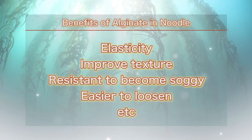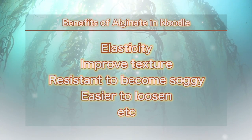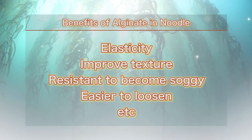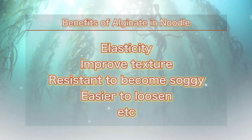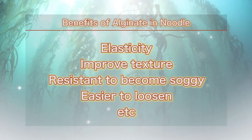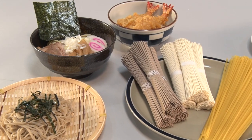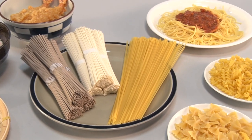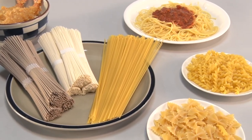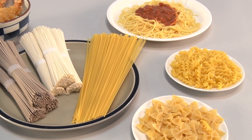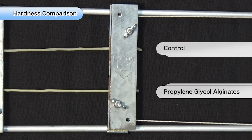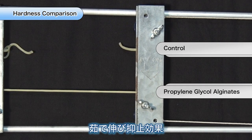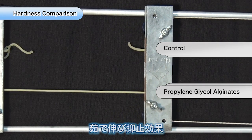Use of alginate also yields benefits in noodle production, where it boosts elasticity and improves texture. Here, we add some alginate to noodle products. When alginate is added to noodles, it creates noodles that are resistant to becoming soggy when boiled.